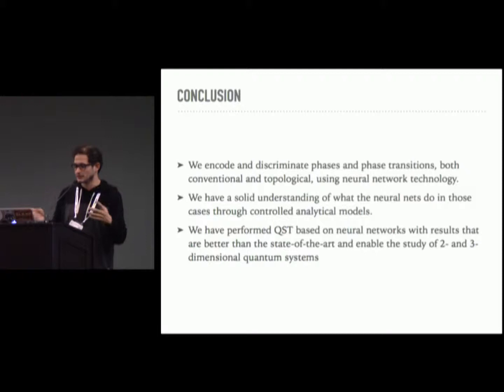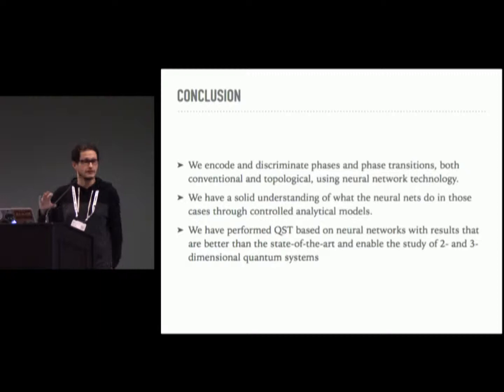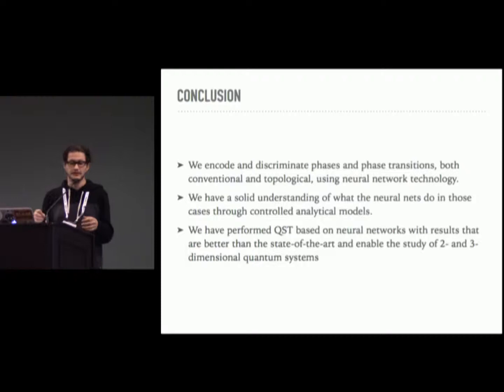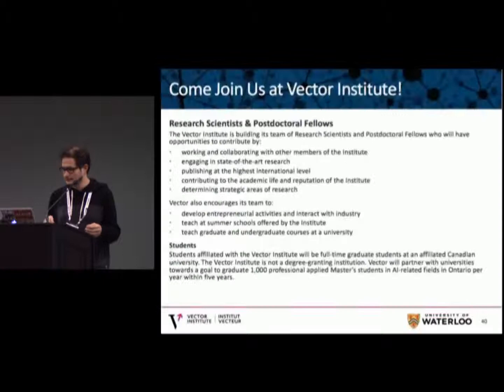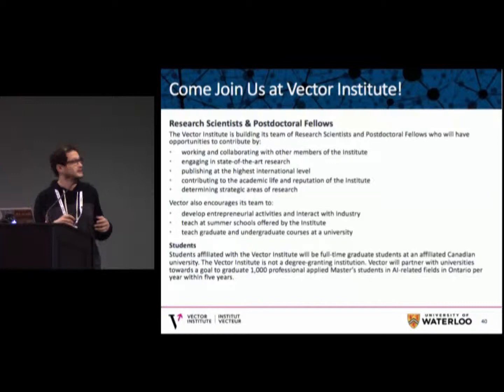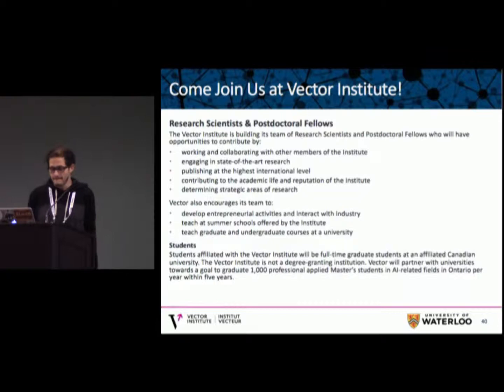In conclusion: we encode and discriminate phases and phase transitions — both conventional and topological — using neural network technology, with a solid analytical understanding of what the neural networks do. We have performed quantum state tomography based on neural networks and RBMs, which we think is very promising. We have research scientist positions, postdoctoral fellowships, and PhD studentships available at the Vector Institute. Thank you.